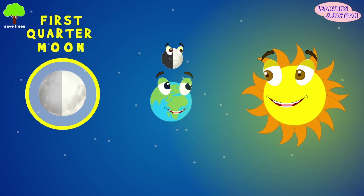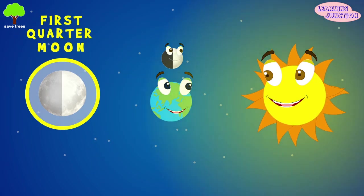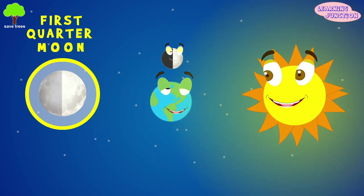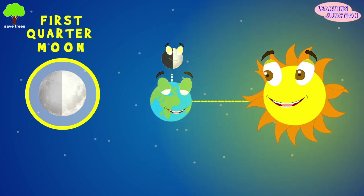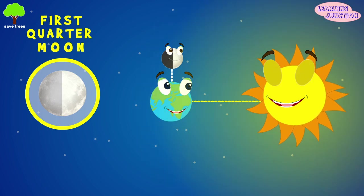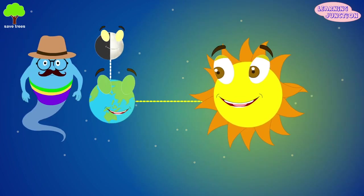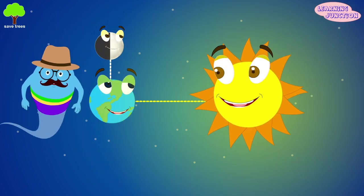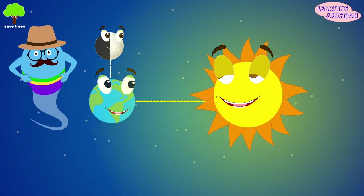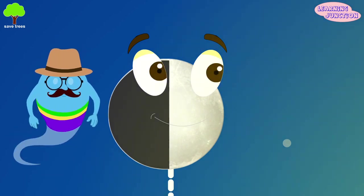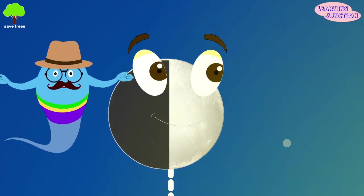First quarter moon. The quarter phase is when the moon has completed one quarter of an orbit around our Earth — one quarter of a full circle, which is 90 degrees from the sun. Half of the moon's surface is visible from Earth, and so this phase is sometimes also called the half moon.